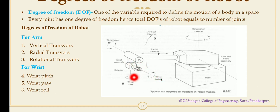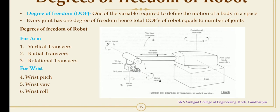So these are the three degrees of freedom for the wrist. Wrist pitch means upward and downward motion. Wrist yaw means rotation on the horizontal plane about vertical axis. And last one is wrist roll, the rotation or rolling motion of the wrist about longitudinal axis.